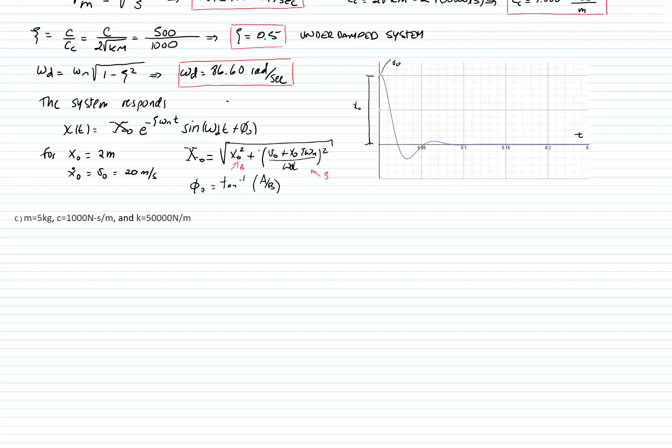The last problem that we will study is with mass 5 kg, coefficient of damping 1000 Ns per meter, and constant of the spring 50,000 Ns per meter. We will calculate the natural frequency, which in this case is 50,000 over 5.